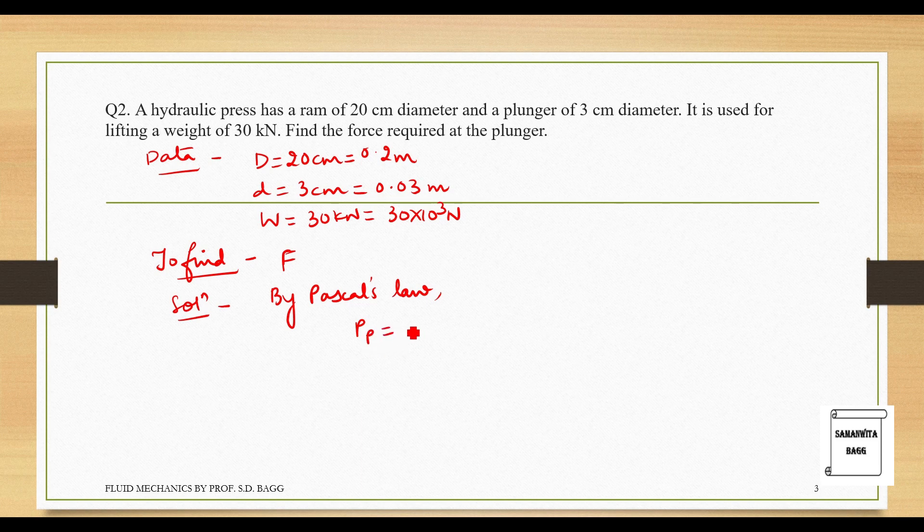Pressure at the plunger equals pressure at the ram end. So, at the plunger end, what we are applying is the force. So, it is force upon area of plunger is equal to the weight lifted upon area of the ram. So, this is F upon π by 4 d square is equal to W upon π by 4 capital D square.